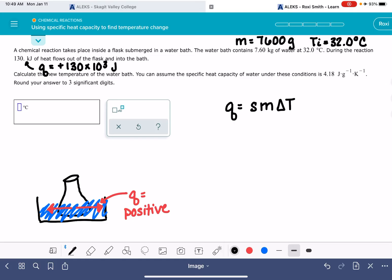Now that we have all this information, let's go ahead and plug it into the QSMAT equation. We have our 130 times 10 to the third joules for our Q. The specific heat of water, which is given to us over here, is 4.18 joules per gram kelvin. The mass of the water is 7600 grams.